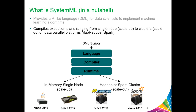Each HOP DAG is compiled into a DAG of low-level operators called LOPs, based on memory estimates, data, and cluster characteristics. LOPs are back-end specific operators and have corresponding runtime implementations called instructions.